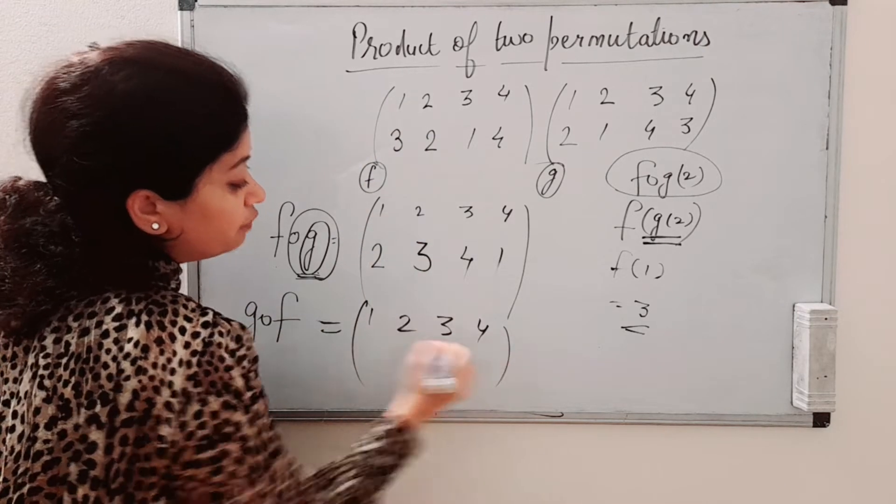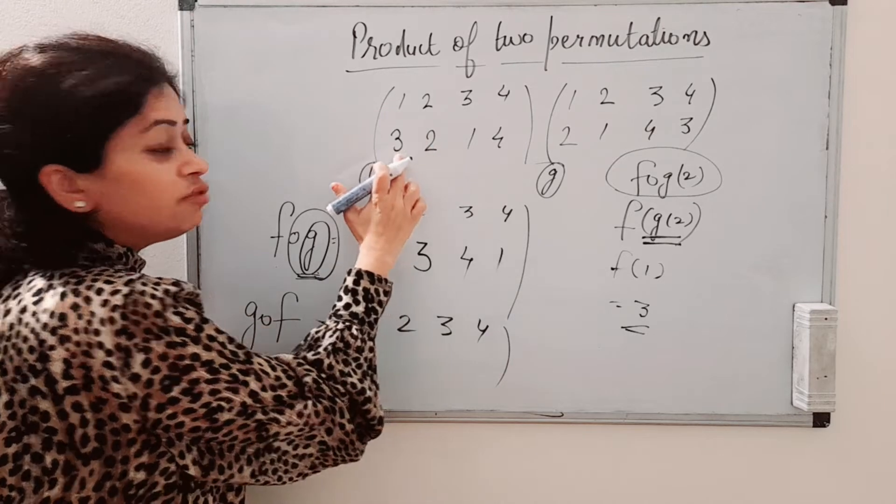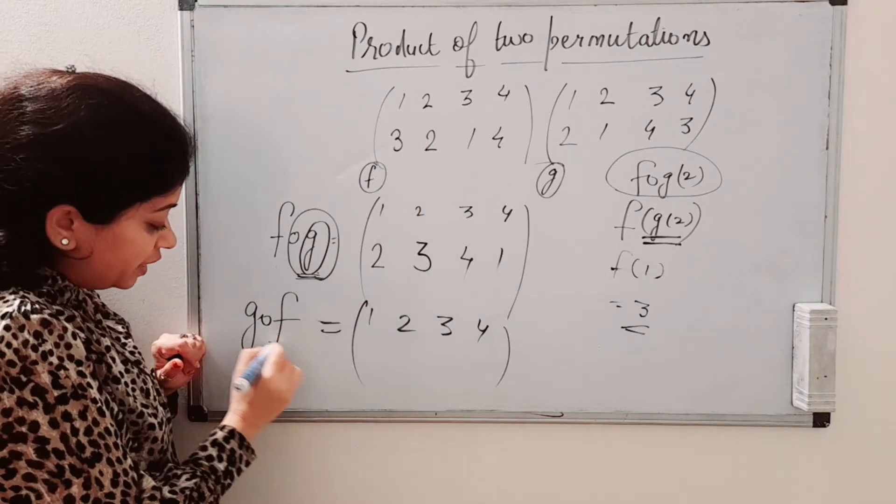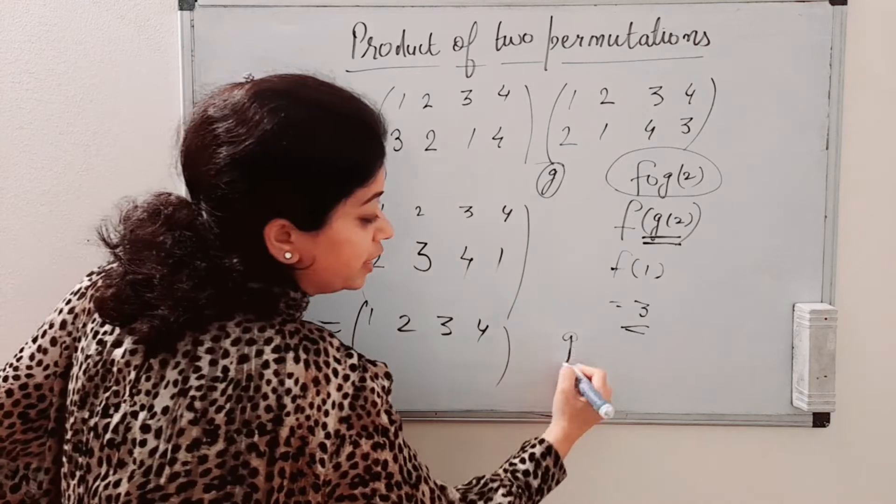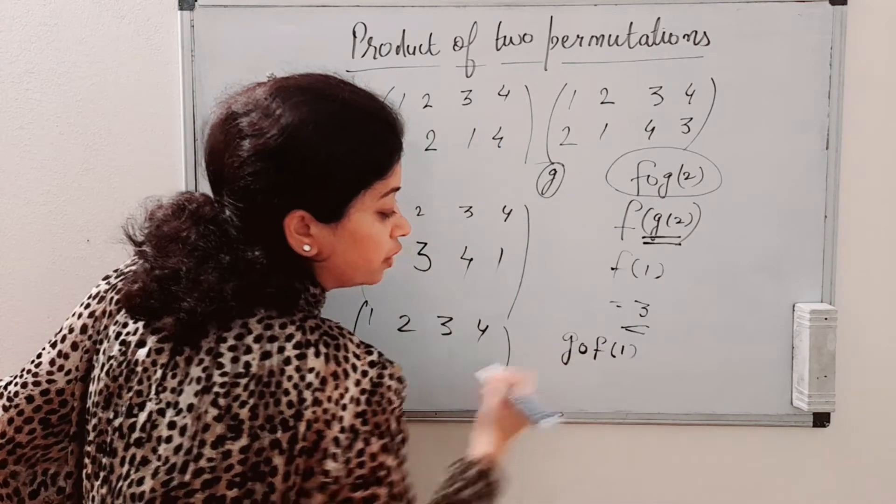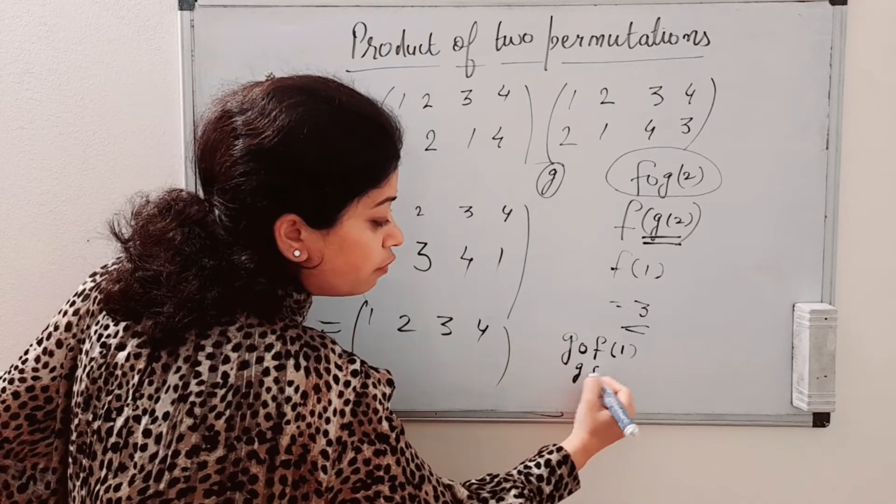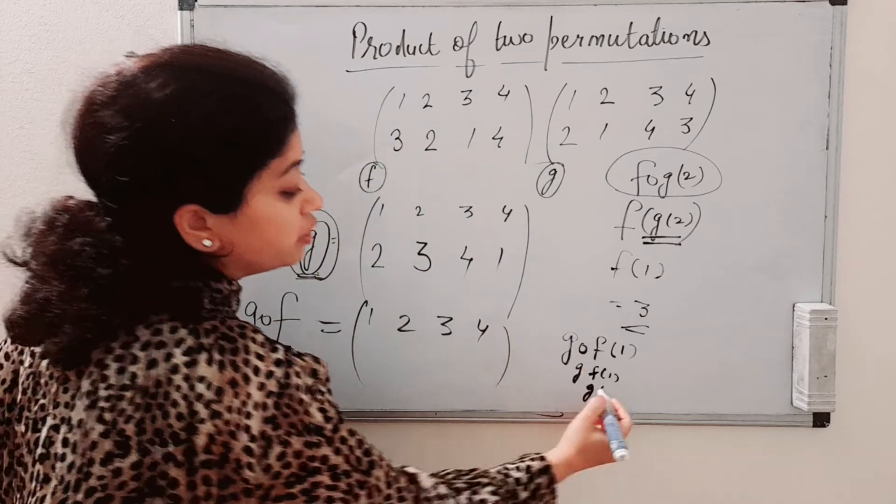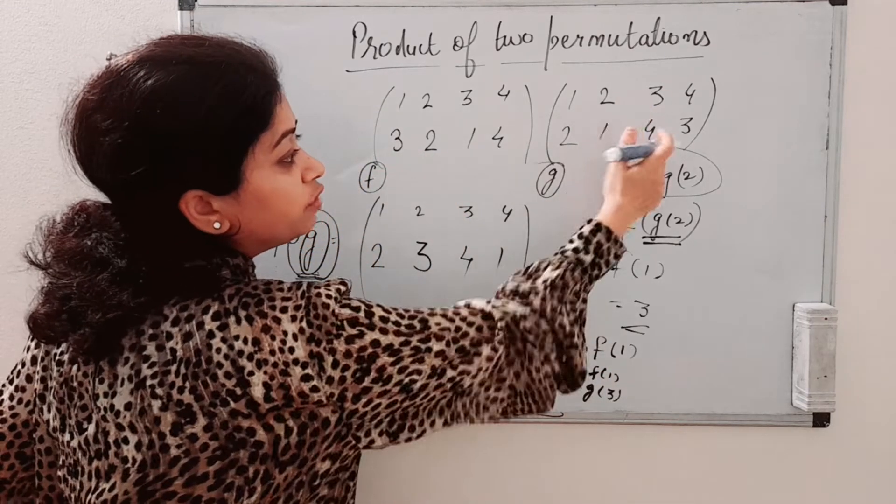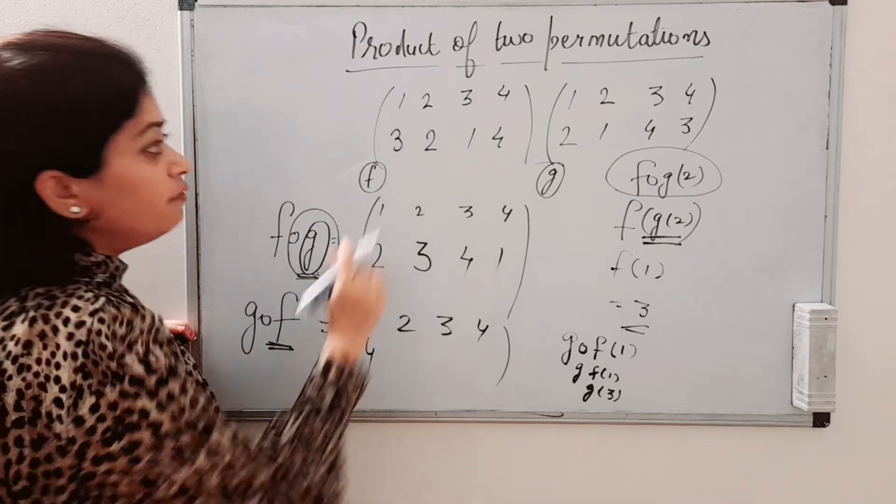We will write 1, 2, 3, 4. Image of 1 is 3. Now we will see in F first, like G of F of 1. So G of F1, F1 is 3. That means G of 3. G of 3 is 4. So 1 will be 4.